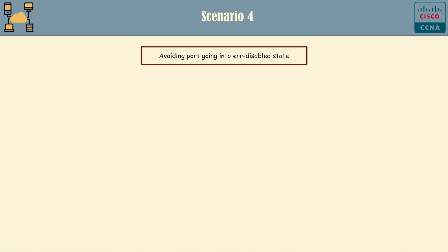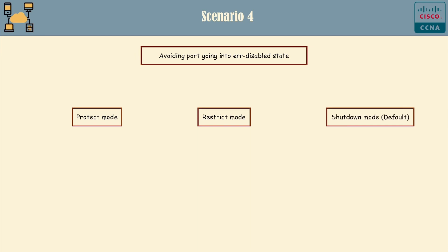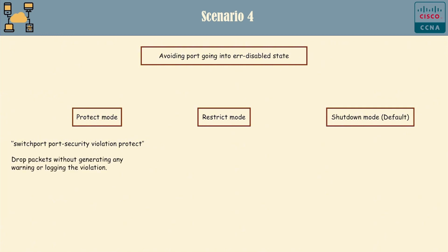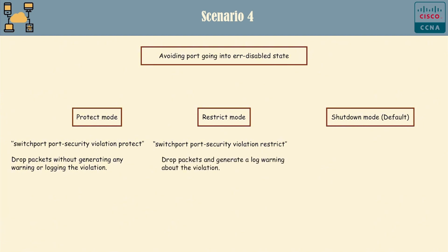When it comes to Case 4 – avoiding the port going into the err-disabled state – to prevent a port from going into the err-disabled state when a port security violation occurs, you have three options: Protect Mode, Restrict Mode, and Shutdown Mode. In Protect Mode (command: 'switchport port-security violation protect'), the switch will drop packets from an unauthorized PC without generating any warning or logging the violation, and the port remains operational. In Restrict Mode (command: 'switchport port-security violation restrict'), the switch will drop packets from an unauthorized PC and generate a log warning about the violation. The port stays active and the violation is logged.